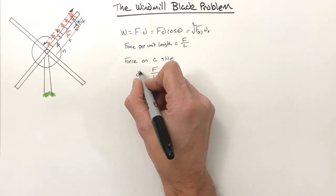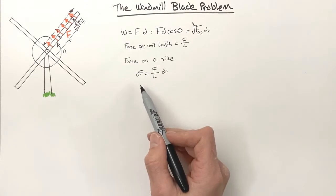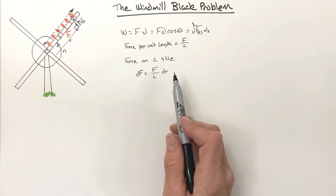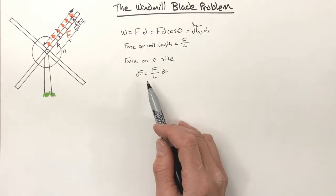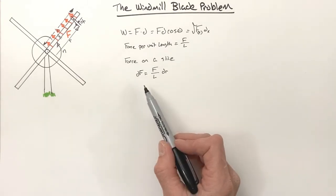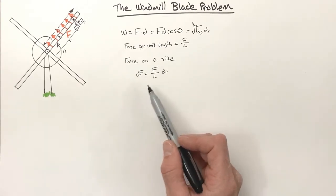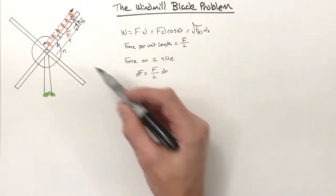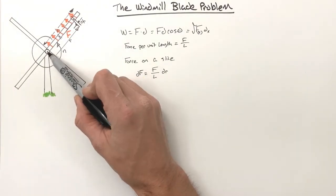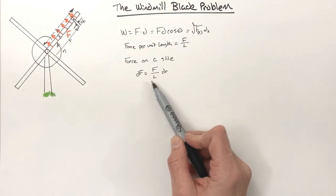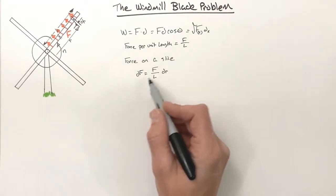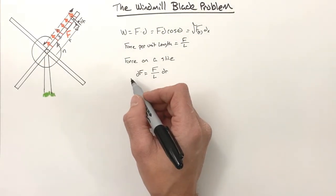This is not the total force — it's just a tiny bit of the total force, which we can call dF. As a sanity check, if you integrate F/L · dr from zero to L, you get back the total force F.